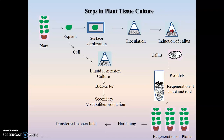In the new nutrient media, regeneration of shoots and roots occurs. The media provides nutrients responsible for shoot and root formation in the callus. Differentiation of cells occurs and organogenesis takes place, leading to shoot and root formation. This step is known as reculturing, as a new nutrient media is used for growth of the callus.